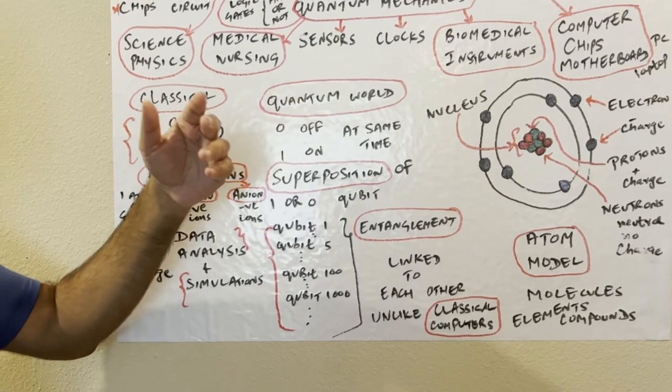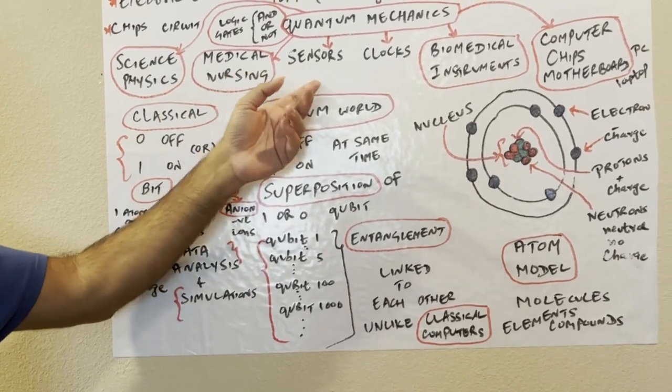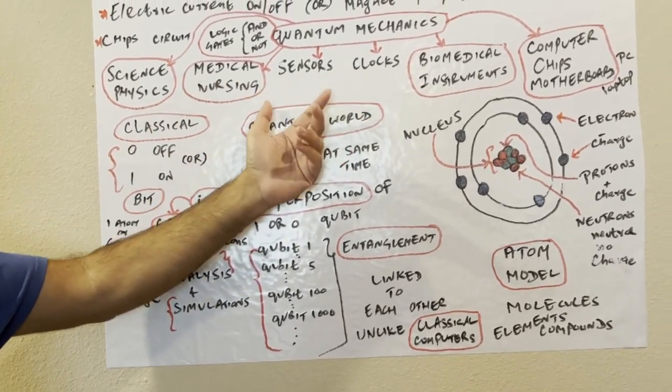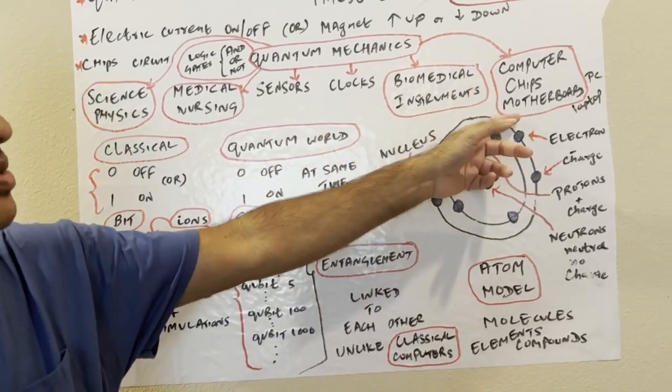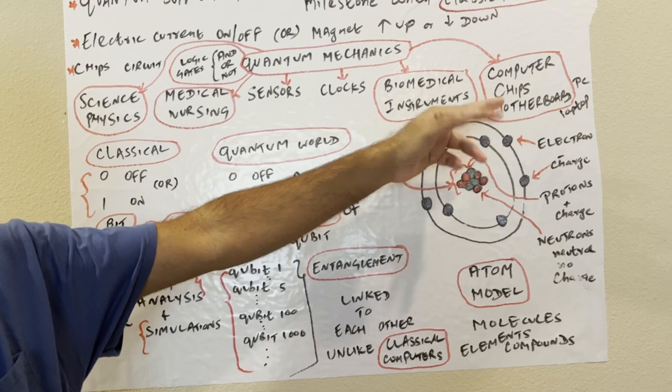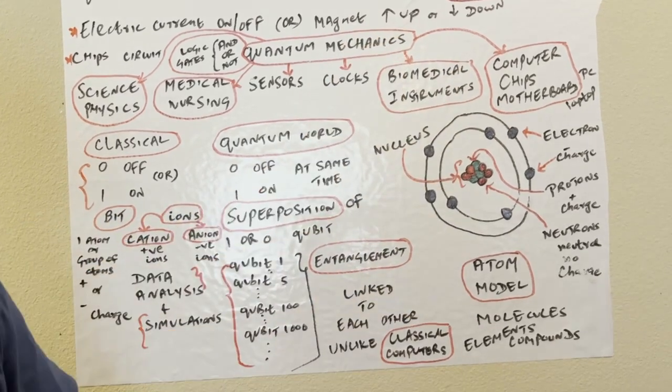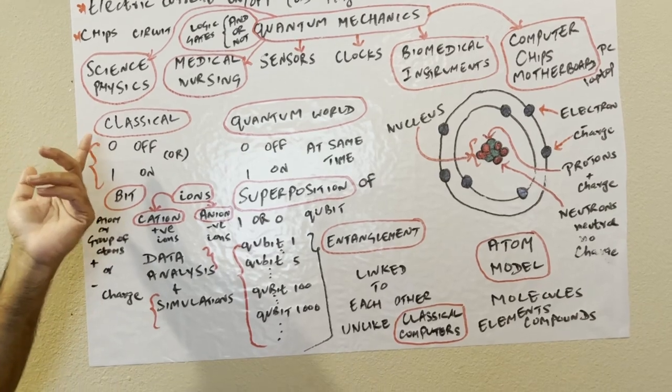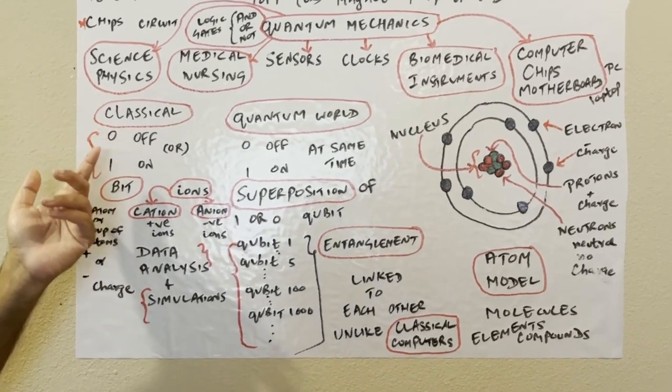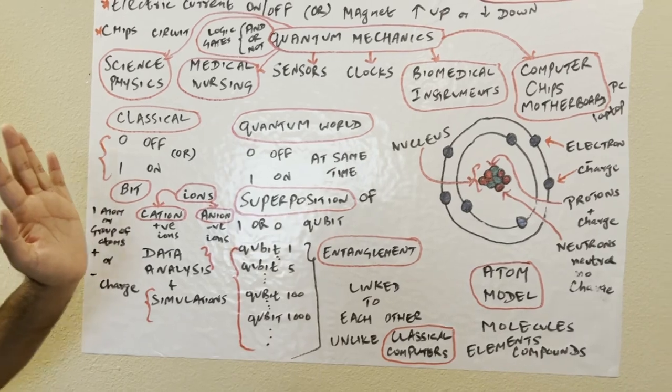How it works is it has sensors. These are some applications of quantum mechanics: science, physics, medical, nursing to create new drugs, medicines, better drug design, sensors, clocks design, biomedical instruments, computer chips, motherboard can be made much better using quantum mechanics for PCs and laptops.